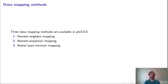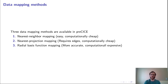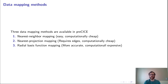The current data mapping methods available in Precise are nearest neighbor, nearest projection, and radial basis function mapping. They all have their pros and cons. Nearest neighbor mapping is computationally cheap and easy to perform; however, it is the least accurate method. Nearest projection is more accurate, but it does require extra information from your solver such as edge connectivity between vertices, and is more computationally expensive than nearest neighbor but far less than radial basis function mapping. However, radial basis function mapping does have the ability to be more accurate for some test cases.